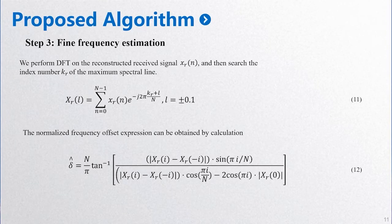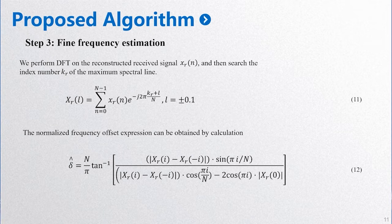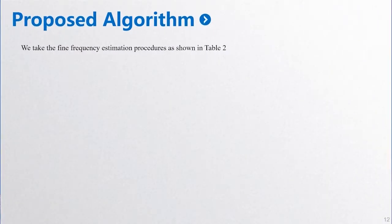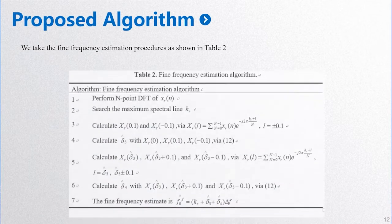Step three is fine frequency estimation. We perform DFT on the reconstructed received signal x_r(n), and then search the index k of the maximum spectral line. The normalized frequency offset expression can be obtained by calculation; it is formula 12. The detailed fine frequency estimation procedure is shown in Table 2.